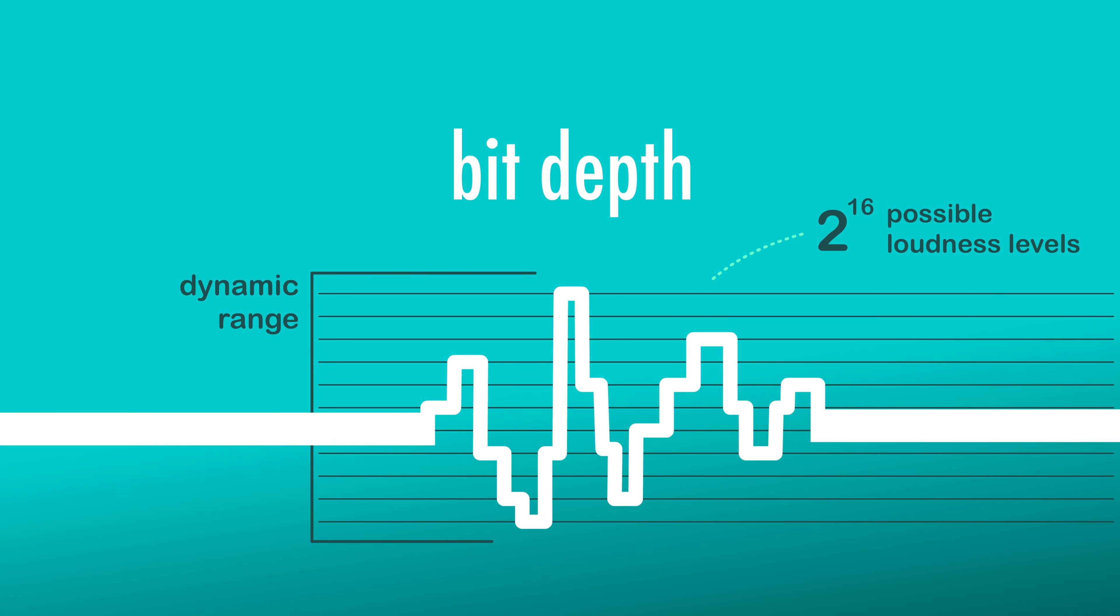In terms of bit depth or resolution, 16 bits is standard for most digital audio. That means that the A to D will map the amplitude level of the analog signal to one of 2 to the 16 or 65,536 discrete digital values.